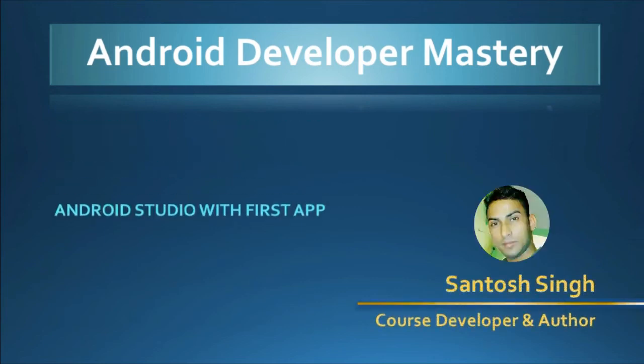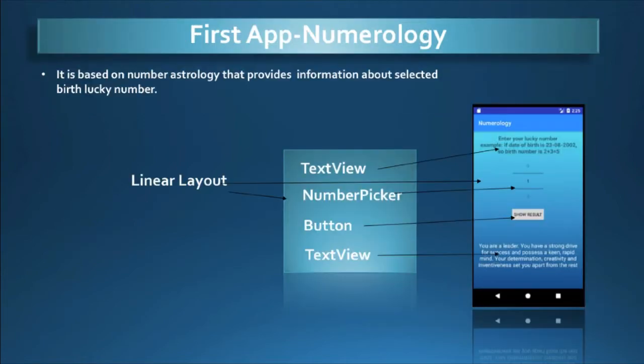Hi, I'm Santos Singh, welcome to Android Developer Mastery. In this part we're going to talk about our first app in Android Studio — a numerology app based on number astrology. It provides information based on your birth lucky number. It has a linear layout containing four things: a TextView, a NumberPicker, a Button, and a TextView that shows your result when you click the button.